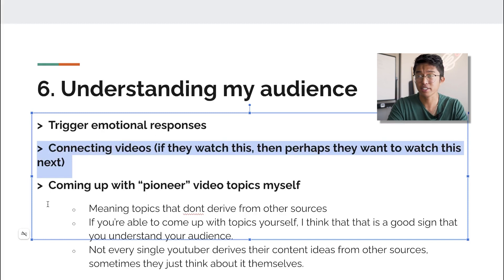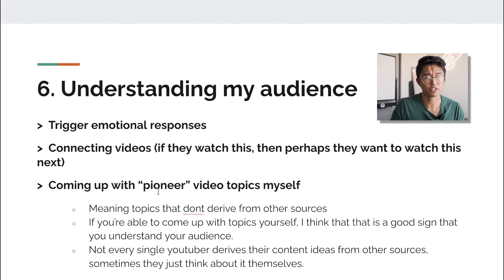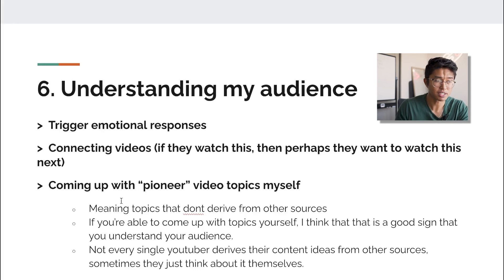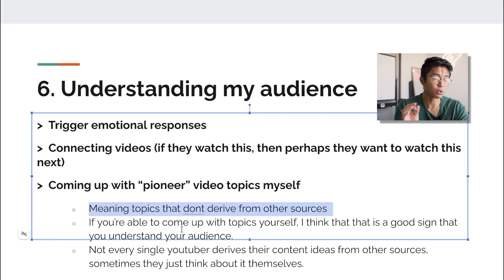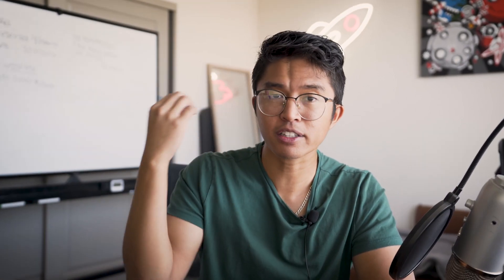The third point under understanding my audience is coming up with pioneer video topics myself. With research you don't always have to acquire ideas from other people — that's a good starting strategy, but once you understand your audience you can start creating videos that have never been done before, and those videos will work. Pioneer video topics don't derive from other sources. Not every YouTuber derives their content ideas from other sources — at the times I've done this it's worked extremely well.